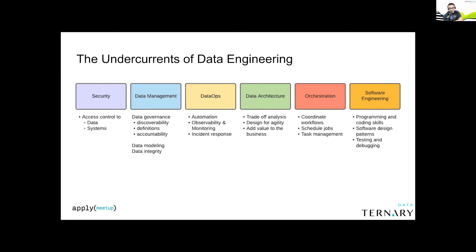Data architecture is another big undercurrent. What architecture really is at the end of the day is trade-off analysis and how you design for agility and add value — there's no such thing as great architecture, only 'least worst' architecture. Architecture underpins how you design and build your systems: do you build for scalability and resilience, or are you tacking on tools and hoping they work together? Orchestration also undercuts a lot — coordinating workflows, scheduling tasks and jobs. Airflow kicked this off and democratized orchestration tools, with Dagster, Prefect, and others following.